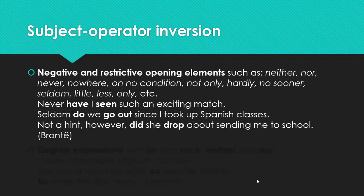For example, never have I seen such an exciting match. Partial inversion. Seen is a participle in its own place as it usually is, but have and I and never are inverted. Never is in the first place, and I the subject is in the third place in the sentence. The same happens with the present tense. Seldom do we go out since I took up Spanish classes. Seldom takes the first place in the sentence. We insert do in order to make an inversion, partial inversion, auxiliary verb. And another example from the classical literature: Not a hint, however, did she drop about sending me to school. Bronte.